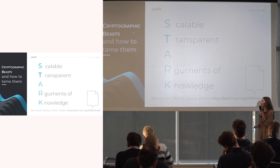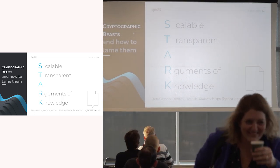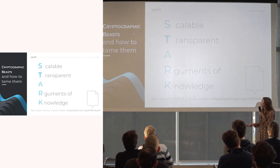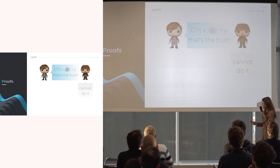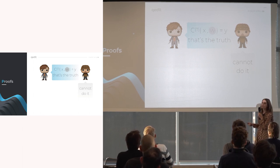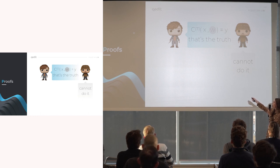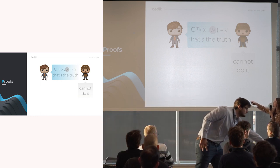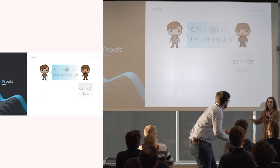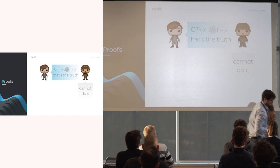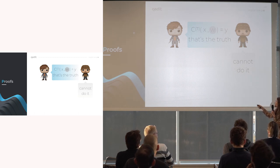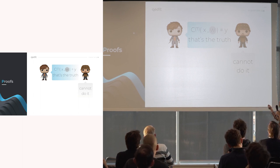We're looking at this cryptographic beast and learning how to tame it — and yes, there will be some Harry Potter references throughout the talk. Here we have Noot's commander: a magician claiming that some computation C runs in T steps on public input X and secret witness W, outputting Y. This notation just means he's claiming that this thing is true.